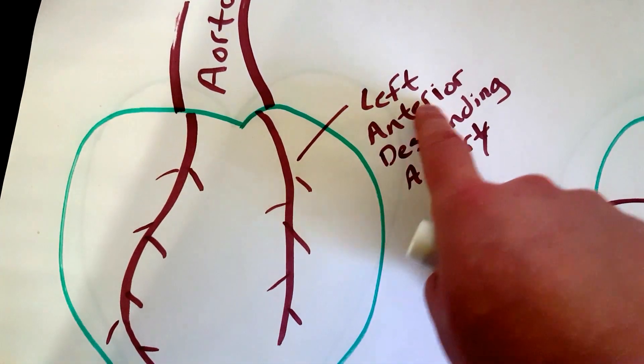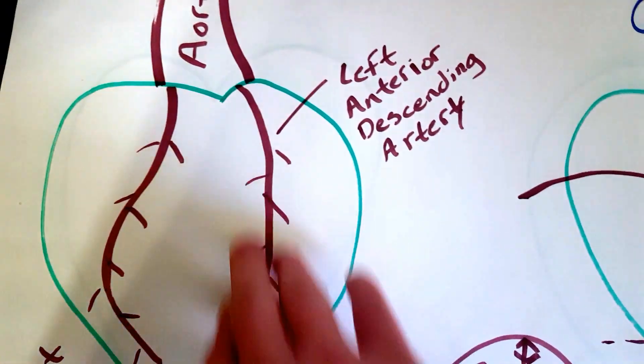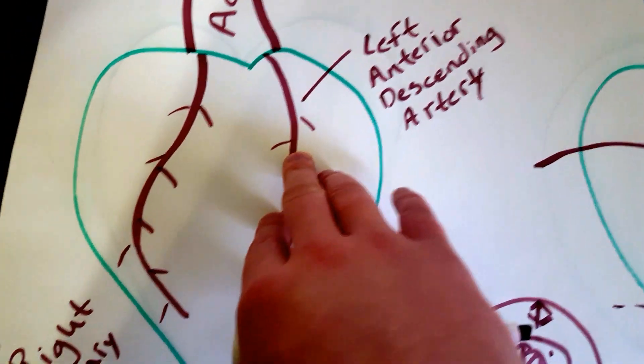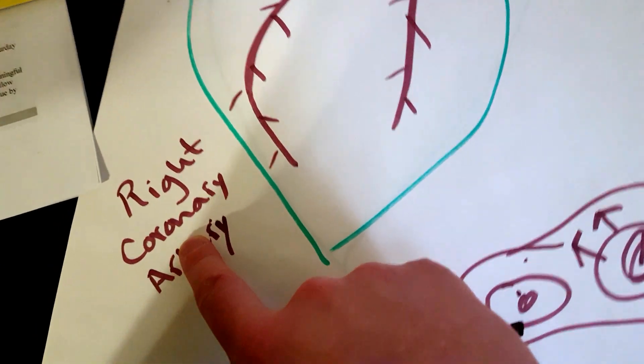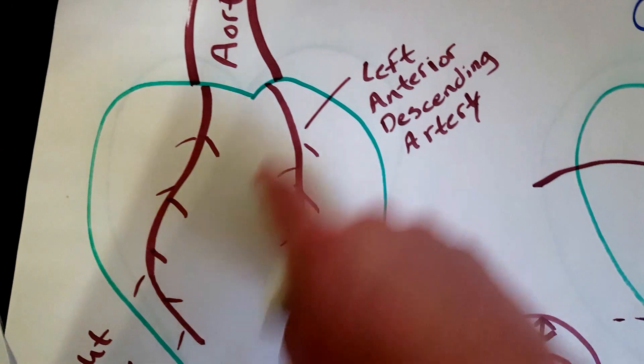Right here you have the left anterior descending artery. Anterior means in front, it's in the front of the heart. And then you have your right coronary artery which is on the right side of the heart and you have another one in the back.